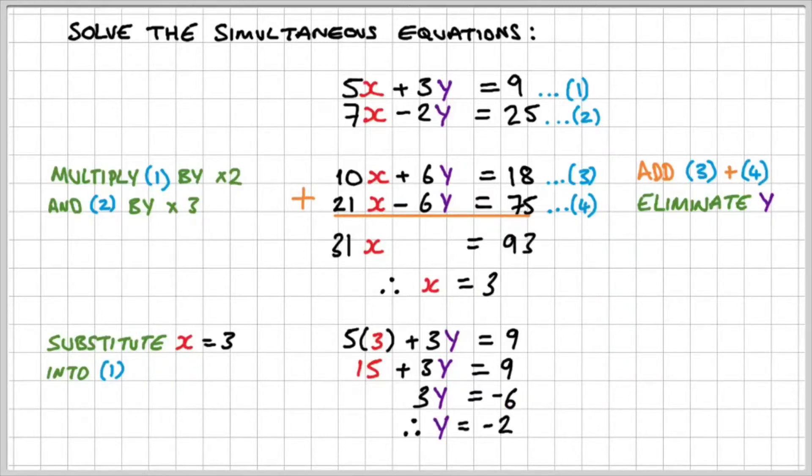And now if I divide by 3, I get y is equal to negative 2. Now I'm not finished until I check that the solutions work for both the equations. So let's quickly check that x equals 3 and y is minus 2.